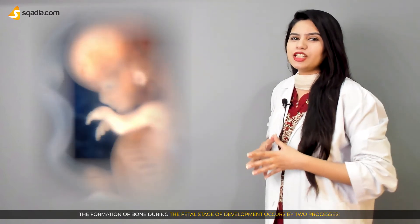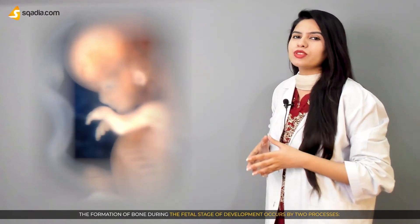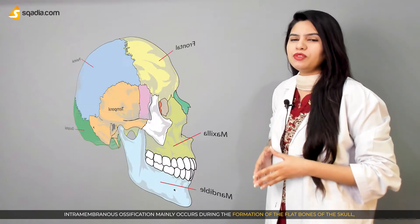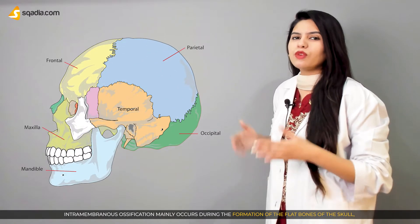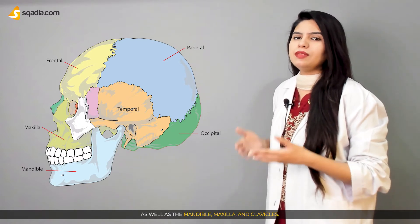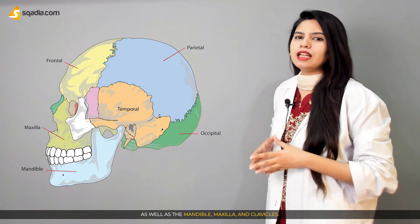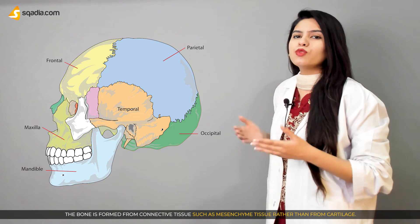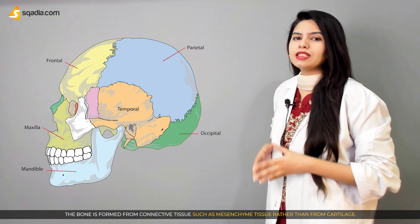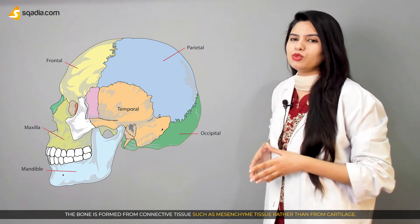The formation of bone during the fetal stage of development occurs by two processes: intramembranous ossification and endochondral ossification. Intramembranous ossification mainly occurs during the formation of the flat bones of the skull, as well as the mandible, maxilla, and clavicles. The bone is formed from connective tissue such as mesenchyme tissue, rather than from cartilage.